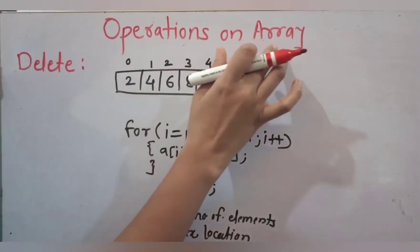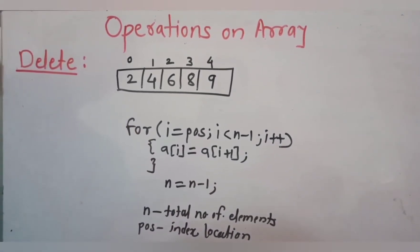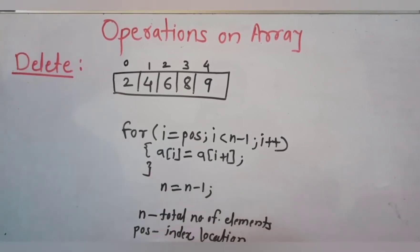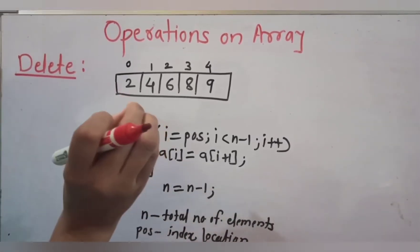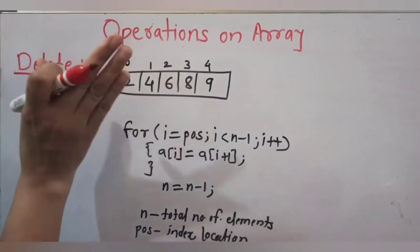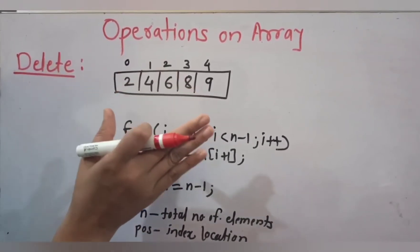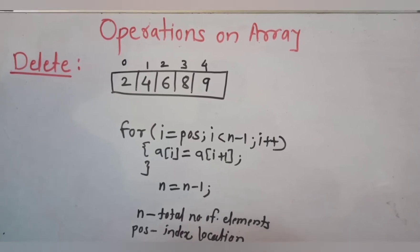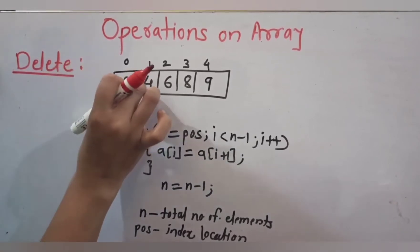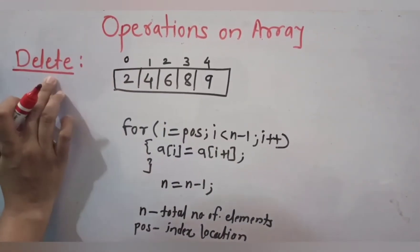Today we are going to see operations on arrays, specifically the delete operation. In previous videos we covered traversing and insertion operations. In the case of an array, if we want to delete a particular element, we have to overwrite that position with the next element. Because arrays use static declaration, memory is allocated at compile time, so it is not possible to delete an element totally from memory — we just overwrite that position.